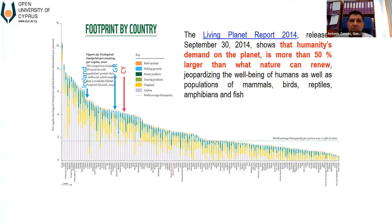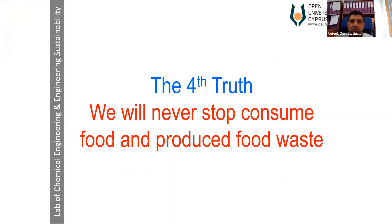When talking about footprint, it deals with actual needs: built-up land, fishing grounds, forest products, cropland, carbon, and so on. According to the Living Planet Report, it's estimated at up to 4.9 hectares per person, while for each Irish person it's approximately 5.2 hectares per year to cover their needs. Among our needs is food, and we will never stop consuming food — and we will continue to produce food waste. Food waste refers to the decrease in quality and quantity of food resulting from decisions and actions by retailers, food service providers, and consumers.